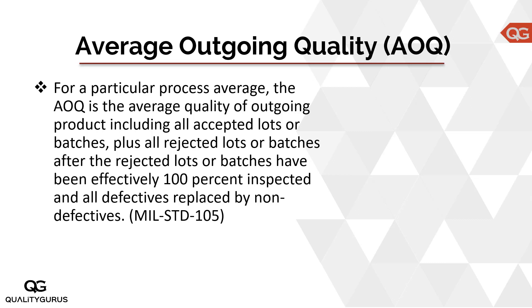effectively 100% inspected and all defectives replaced by non-defectives. Let's take a scenario where you are getting lots one by one. You get a first lot, and based on the sampling you accept that lot — it goes into your work. A second lot comes and you reject it. That rejected lot will go through screening: each piece will be checked, good pieces kept on one side, bad pieces on another.